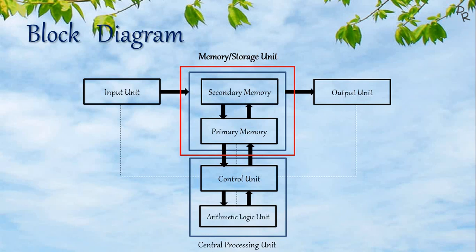The memory unit in the computer is the combination of secondary memory and primary memory. The secondary memory, or secondary storage, is the permanent memory of the computer — meaning the data and instructions are stored for a longer period of time.